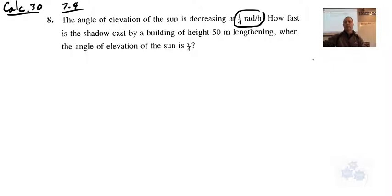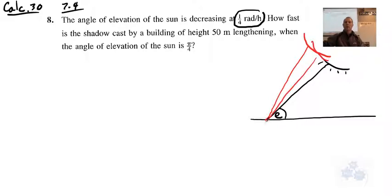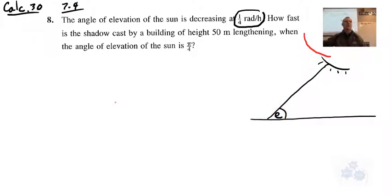When you do these questions you want to draw a diagram — that's pretty important. Here's the sun. The angle of elevation is always measured from the horizontal, so that angle is e, the elevation of the sun. As the sun goes down, that angle gets smaller — large, smaller, small — so the angle of elevation is decreasing.